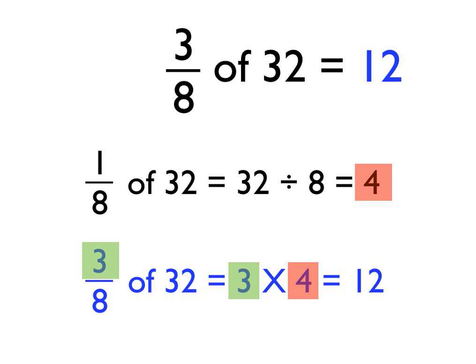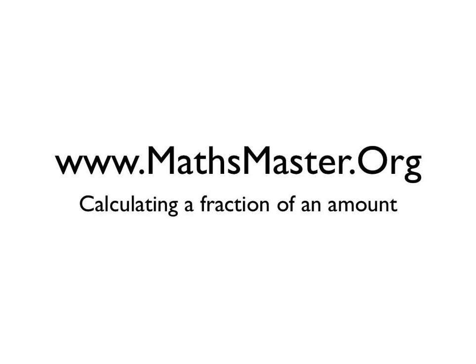Just to recap: if we want three-eighths of 32, we start off by finding one-eighth by dividing by eight, and then we times it by three because we want three-eighths. That was calculating a fraction of an amount. If you want to see some more fantastic maths videos, please visit MathsMaster.org.